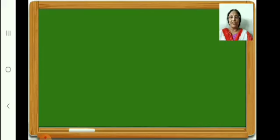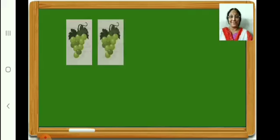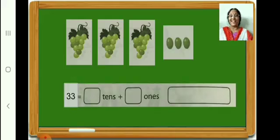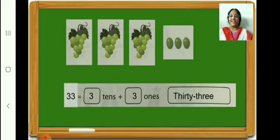On this page we are going to write numbers 33 to 39, because numbers 30, 31, and 32 are already done. How many grapes are there? 10. Here, how many grapes? 10. In this bunch, how many grapes? 10. In the last bunch, how many? 3. Therefore, in all, 33 grapes. 33 is equal to 3 tens plus 3 ones. Write in your book, then write the number name 33.